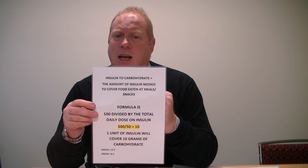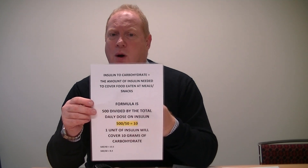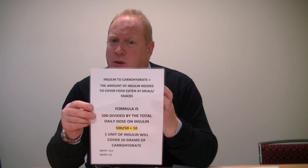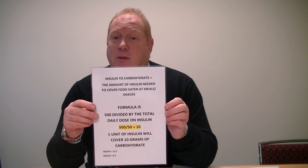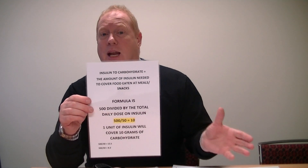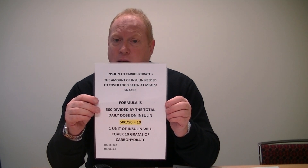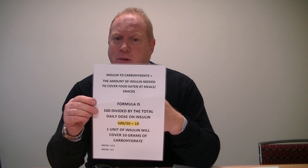Now he knows exactly how much insulin to give depending on what he's eating. The main thing he has to do is learn how to count carbs in grams, ideally in 10-gram increments. For example, if he was eating 60 grams of carbohydrate — say four slices of bread — he would deliver 6 units of insulin to cover that, giving him a lot more flexibility in the food he's eating.